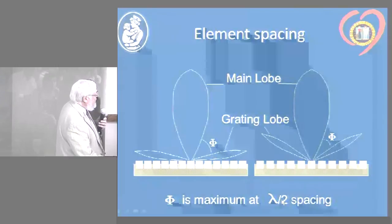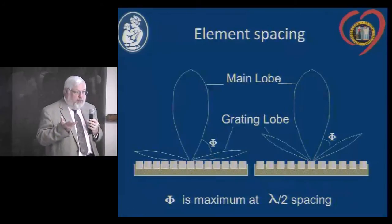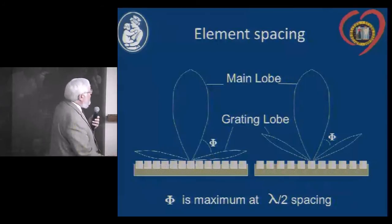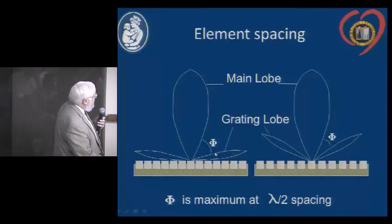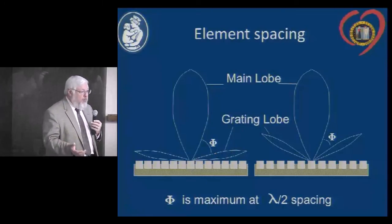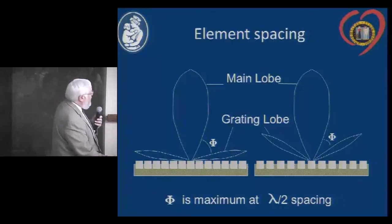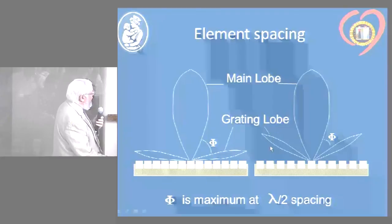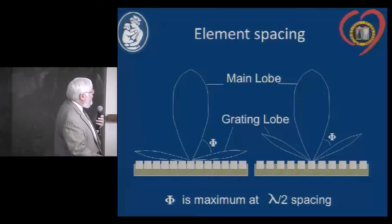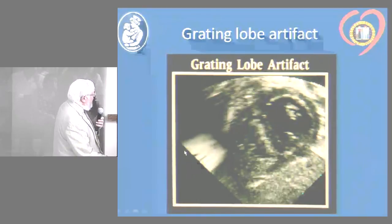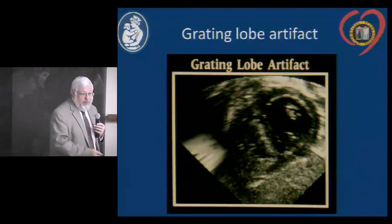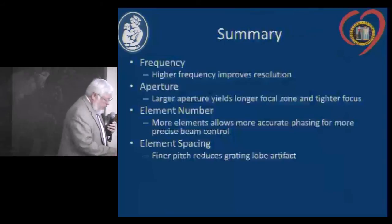At lambda-over-two spacing, the angle between the main beam and grating lobes is greatest, meaning the grating lobe artifacts are pushed further away. Grating lobes go off into space and create artifacts within the image. An example of a grating lobe artifact shows them occurring near the edge of the image; if a structure of interest were beneath one, you wouldn't be able to see it. So element spacing is important for 2D image quality.